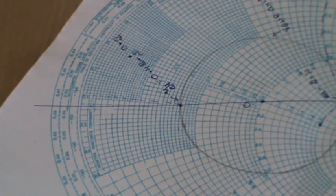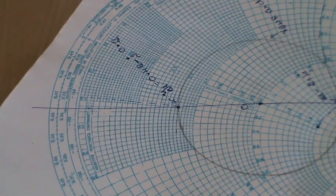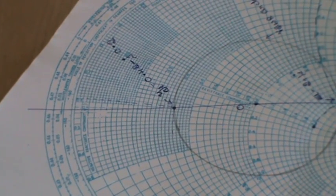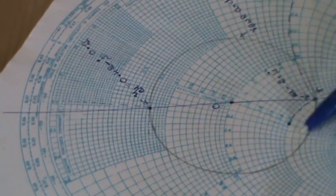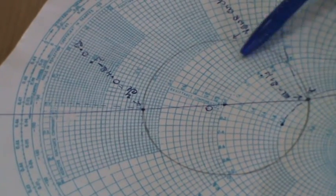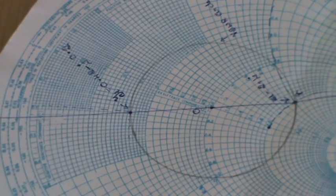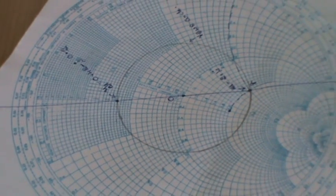Now we need to obtain what is the d by lambda value and what is the l by lambda value. For that first you need to check where this VSWR circle cuts the unit circle of Smith chart.